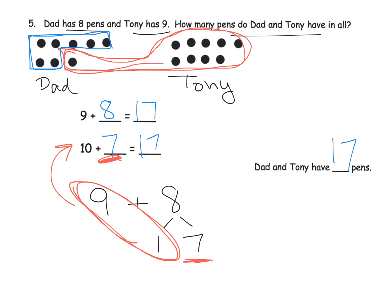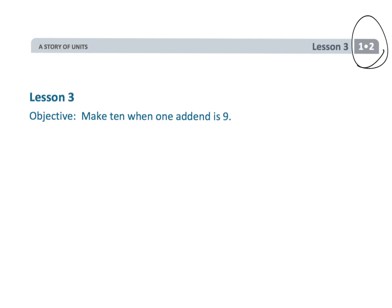At this point, we're using dots, but we're foreshadowing so much. We're foreshadowing 10 frames, we're foreshadowing decomposition. So parents and teachers, let your students play with these dots or however they want to draw their pictures, knowing that our first graders are not going to be stuck drawing pictures forever. We're just using these pictures to foreshadow some really important math. That wraps up first grade module 2 lesson 3: making 10 when one of those addends is 9.